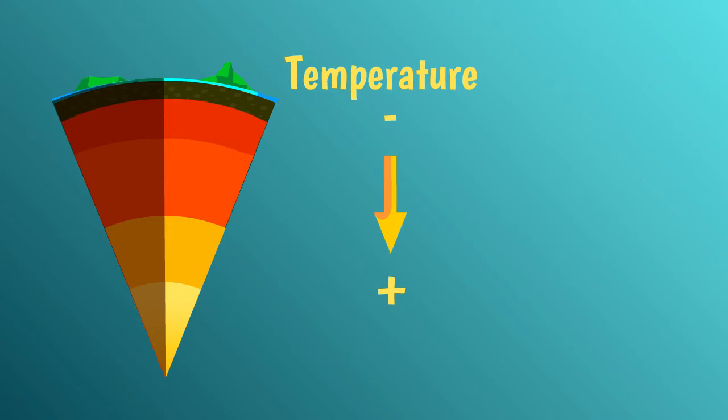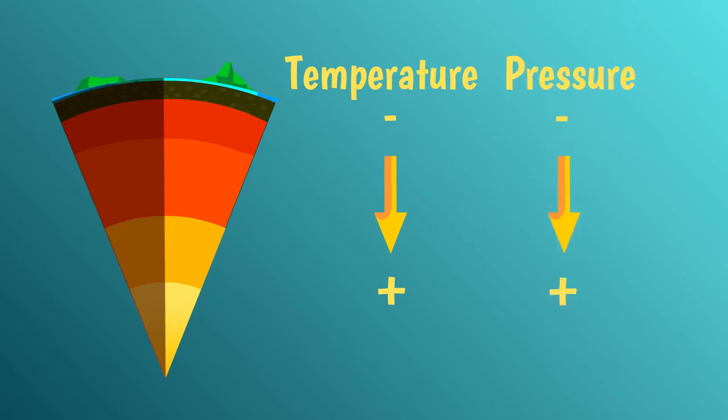Why is that? You may know that temperature increases as we go deeper inside the Earth. In fact, the temperature increases from approximately 15 degrees Celsius at the surface to more than 6000 degrees at the centre. But as we go deeper and deeper, pressure increases too, since there are more and more rocks weighing down.